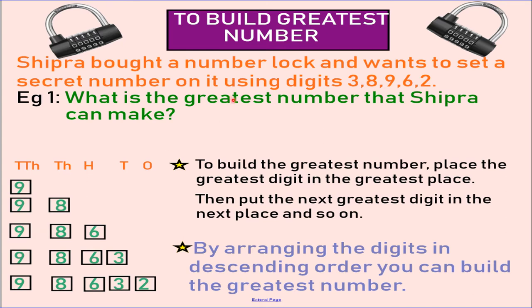Now, to build the greatest number, what do we need to do? Let us understand it with the help of this example. Shipra bought a number lock and wants to set a secret number on it using digits 3, 8, 9, 6, 2. What is the greatest number that Shipra can make using the given digits 38962? It is very simple, dear children. To build the greatest number, place the greatest digit in the greatest place and then put the next greatest digit in the next place and so on.